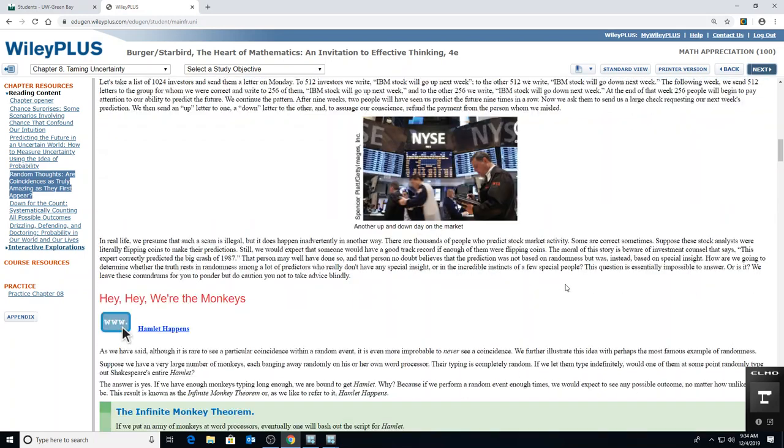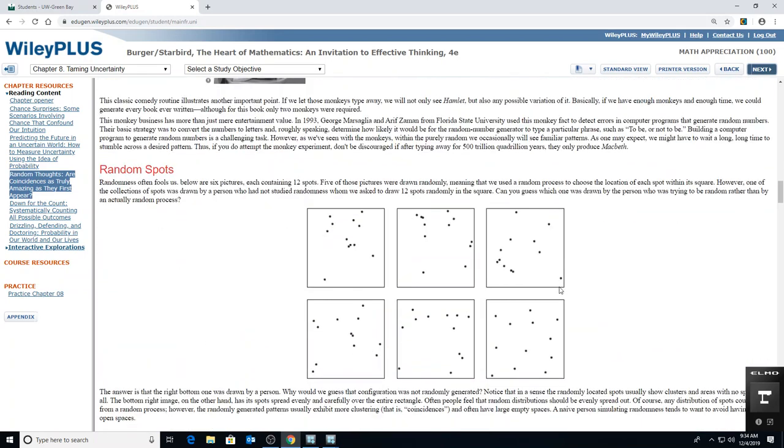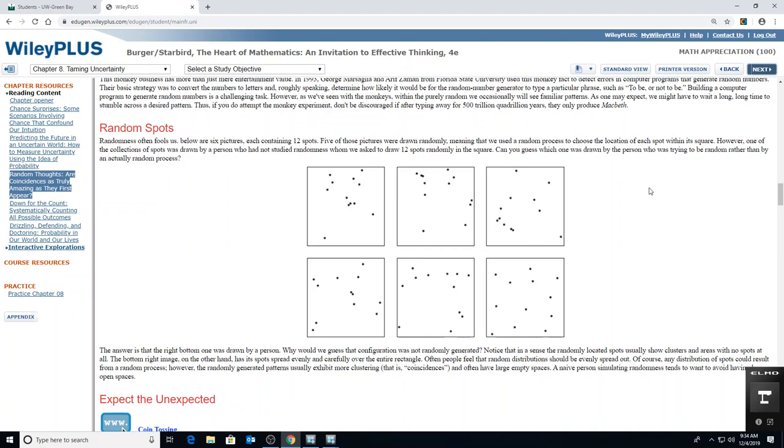I wanted to show you a set of pictures here. So there's six pictures here. These are random dots from a computer in five cases, but in one case the dots are placed by a person trying to behave randomly. So can you tell which box is different from the others? Which one is a person trying to behave randomly versus a computer that actually is randomly choosing data points?